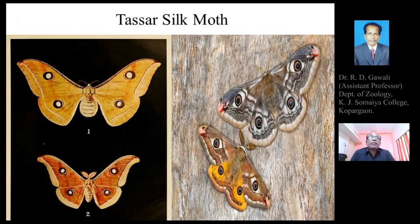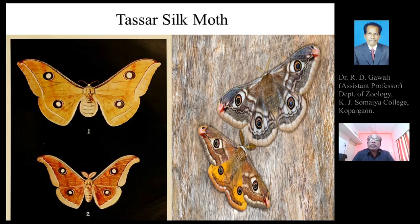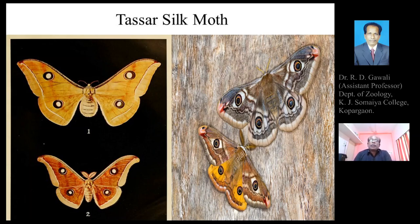Images of the tussar silk moth show the upper figure with yellowish-brown color and fatter abdomen representing the female, and the lower figure with smaller size, copper-brown color, narrower abdomen, and bushy antennae representing the male. Another figure also shows males and females of the tussar silk moth but of a different species.